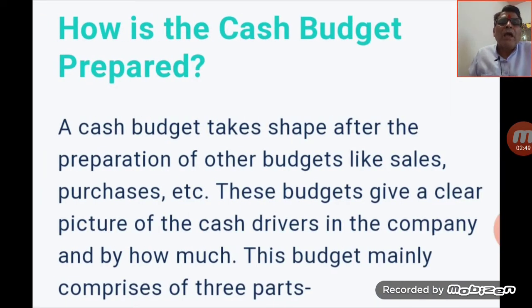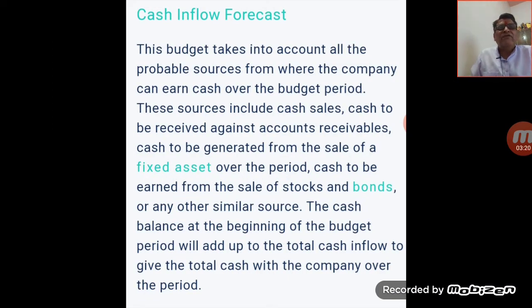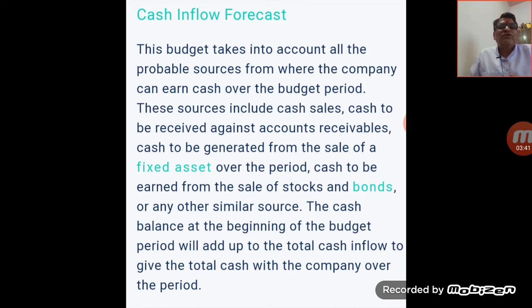Now, how is the cash budget prepared? A cash budget takes shape after the preparation of other budgets like sales, purchase, master budget, etc. These budgets give a clear picture of the cash flows in the company. This budget mainly comprises three parts. The first part is cash inflow forecasting — in the period for which we are preparing the budget, from where will cash come?